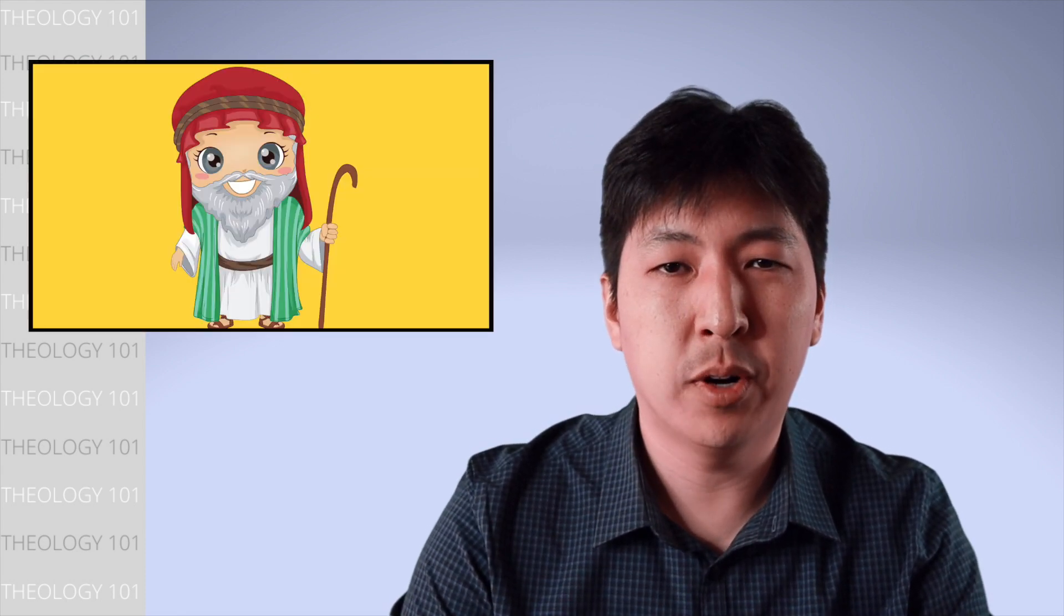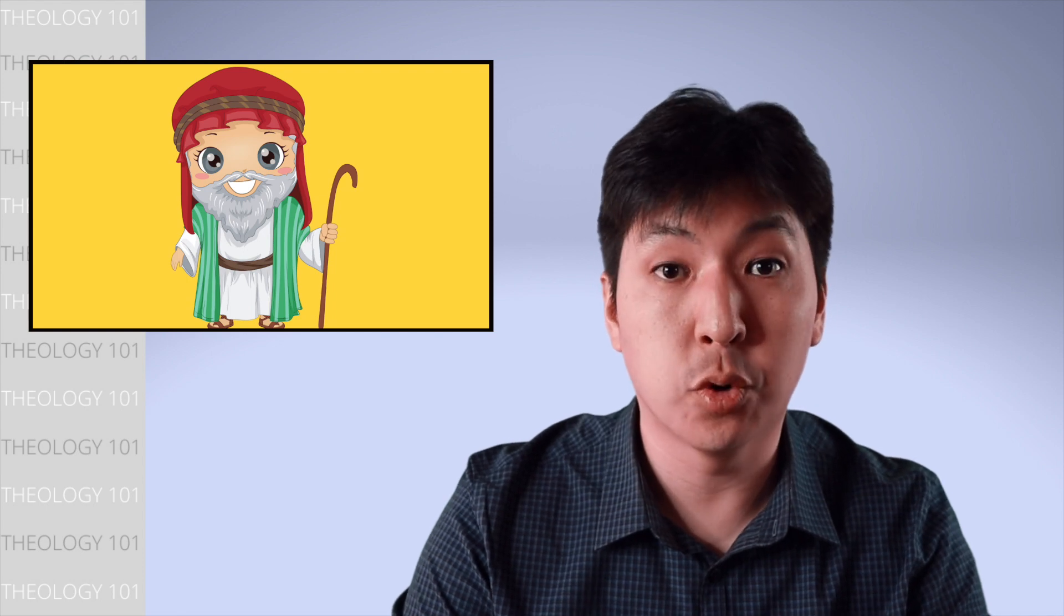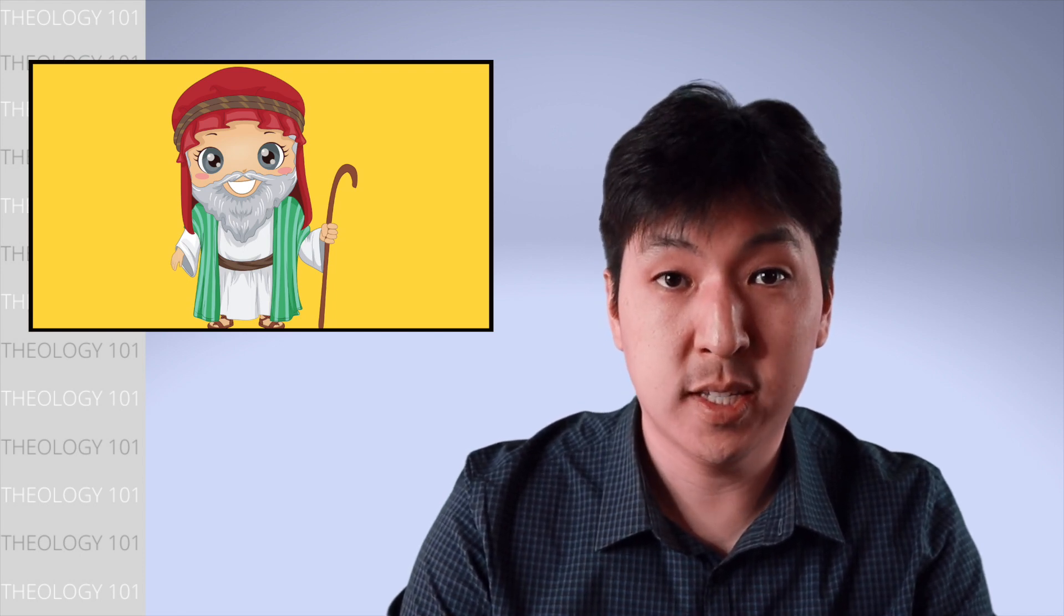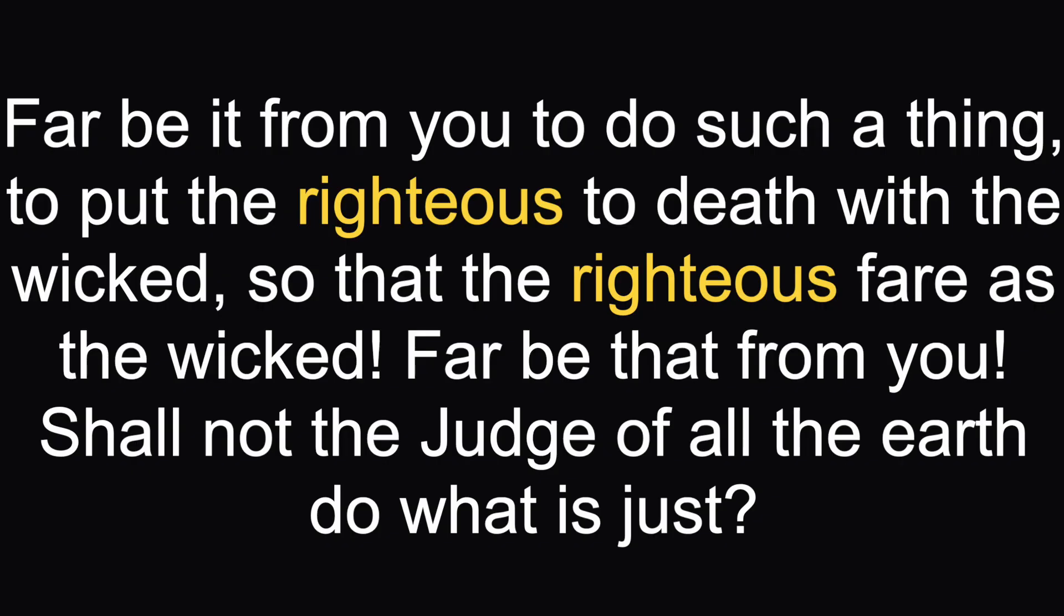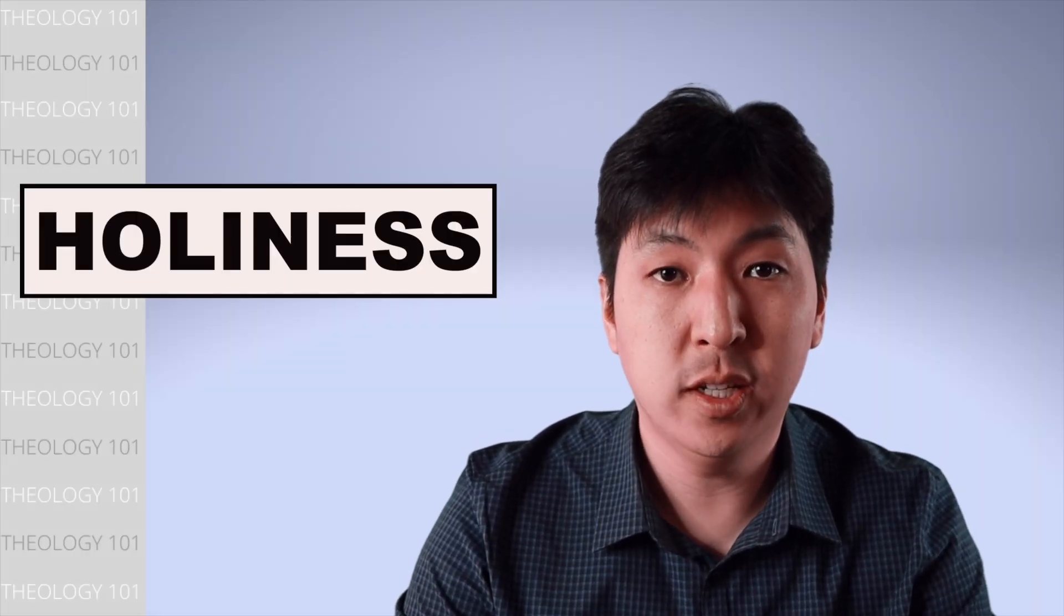Do you remember the story when Abraham appealed to God to not destroy Sodom and Gomorrah? This is what he said: Far be it from you to do such a thing, to put the righteous to death with the wicked, so that the righteous fare as the wicked. Far be that from you. Shall not the judge of all the earth do what is just? Abraham appeals to God's character. He appeals to His holiness.